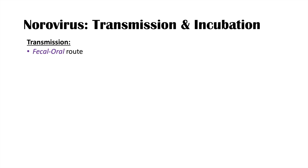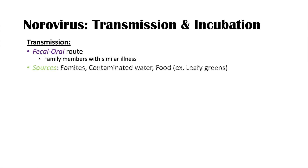The norovirus is transmitted through the fecal-oral route. If you see an individual who has the norovirus, you want to look at their family members with similar illnesses, because those family members can easily pass it along through the fecal-oral route. An infected individual can become contaminated on their hands and touch objects like fomites — objects like furniture. It can also come from contaminated water sources: if feces from an infected individual gets into the water supply, individuals drinking that water can become infected.